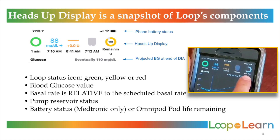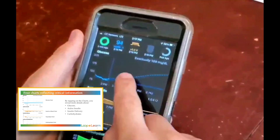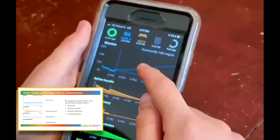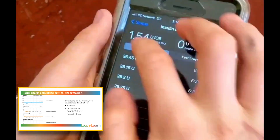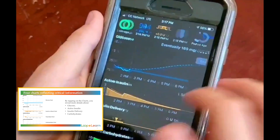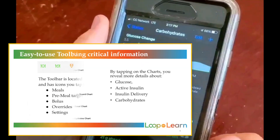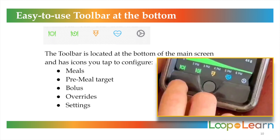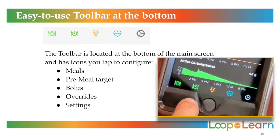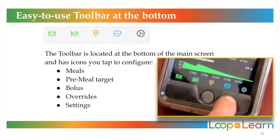This is the battery status for Medtronics, but I have an Omnipod, so instead it's the Omnipod Pod life. By tapping on the charts, you reveal more detail about glucose, active insulin, insulin delivery, and carbohydrates. The toolbar located at the bottom of the screen shows meals, pre-meal target, bolus, overrides, and settings.